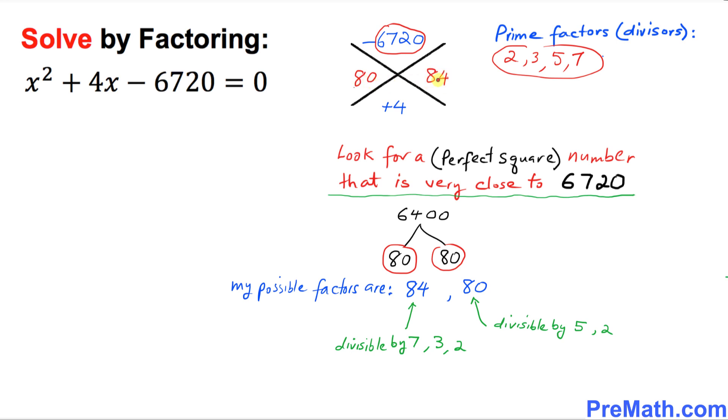We can see the difference is positive 4. The only thing is we need to fix the sign. So this becomes positive 84 and negative 80. Thus, our two factors turn out to be negative 80 and positive 84.